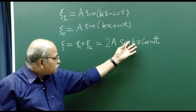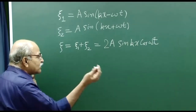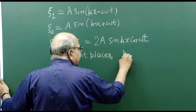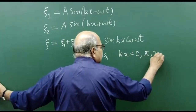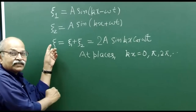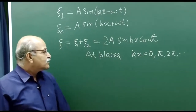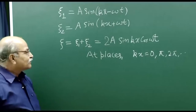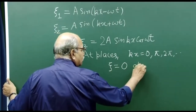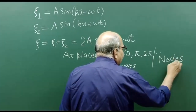At places where kx equals 0 or any integral multiple of π — that is, kx = 0, π, 2π — the factor sin(kx) is always zero, so the net displacement is zero for all time, any t. These positions are known as nodes.